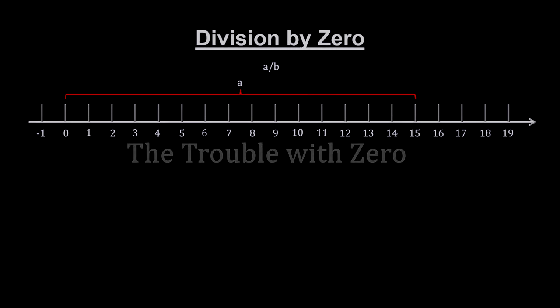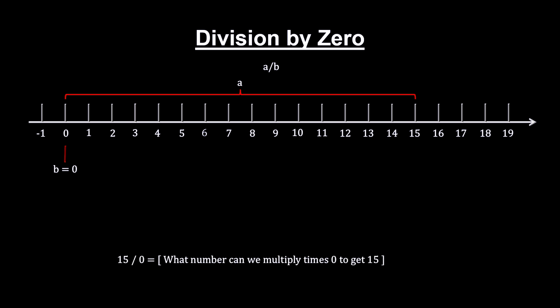It's important to understand that division has a problem when it comes to the number zero. Suppose a is a number not equal to zero. Then, for a divided by zero, we're asking what number, when multiplied by zero, will give us a.